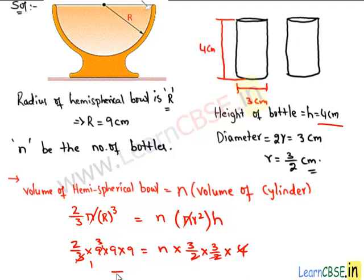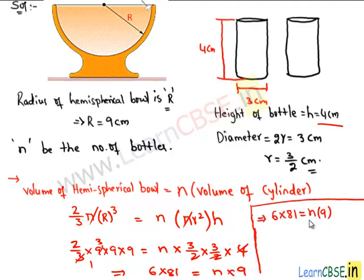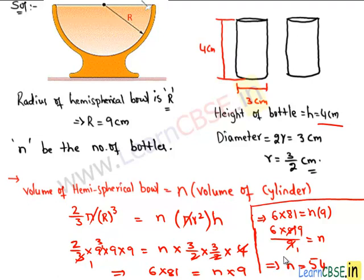We remain with 2 × 3 = 6, times 81 (since 9 × 9 = 81), equaling n × 9. To find n, divide both sides by 9: n = 6 × 81 / 9 = 6 × 9 = 54. Therefore, 54 bottles are required to fill the liquid from this hemispherical ball.